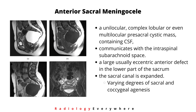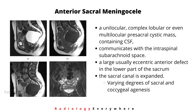These are usually either unilocular, complex lobular, or even multilocular pre-sacral cystic masses containing CSF. This anterior sacral meningocele communicates with the intraspinal subarachnoid space. You can see a large, usually eccentric anterior defect in the lower part of the sacrum.